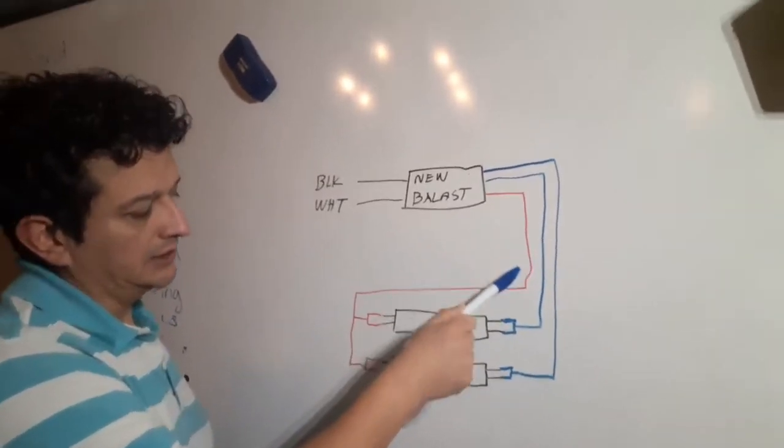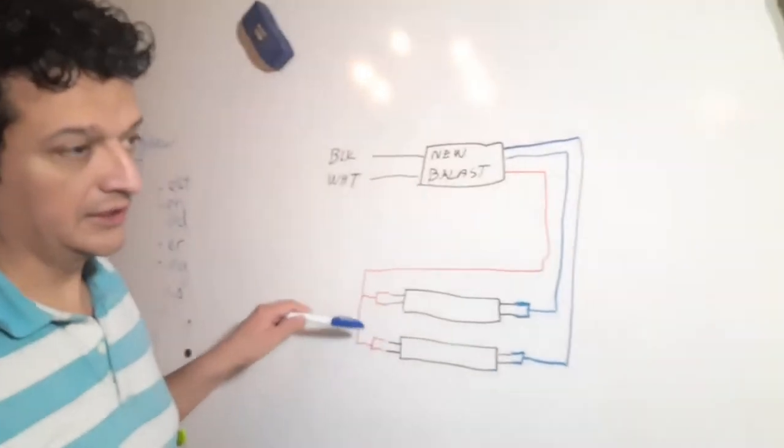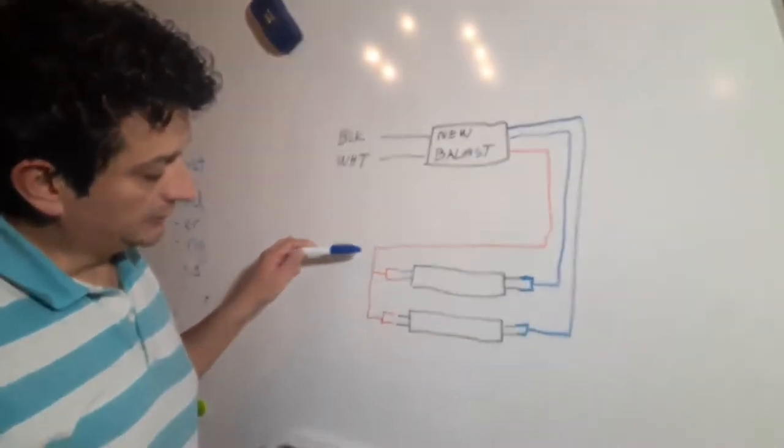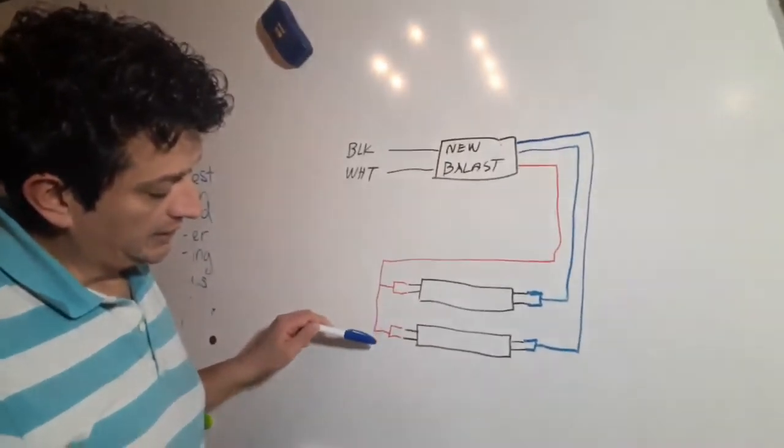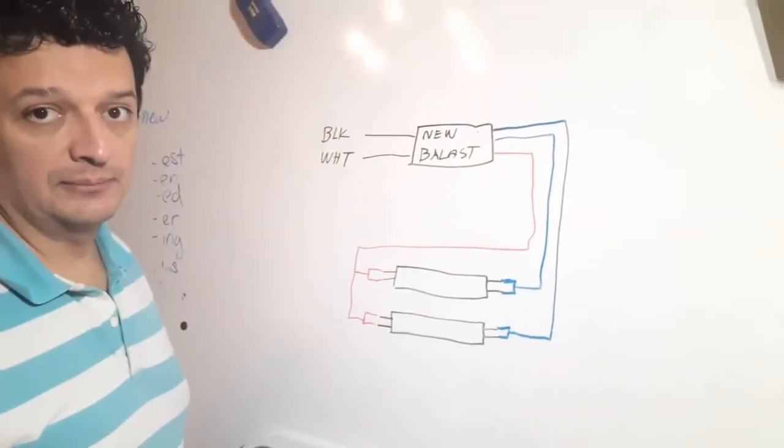And then on the other side there's a red wire that's going to go to the other side of the lamps. And this is going to get split once and then a second time here to the two leads in the new lamp.